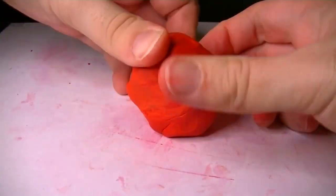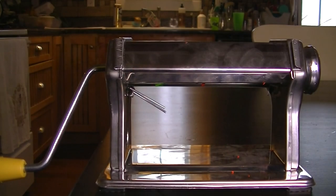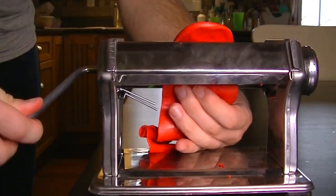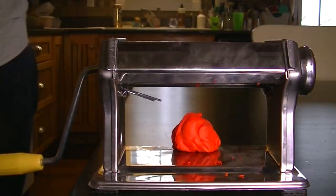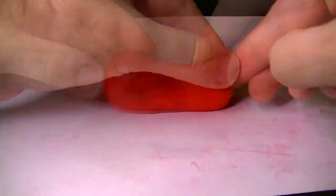Next we're going to put it through this clay conditioner, which kind of looks like a pasta machine. This will help speed up the process of softening the clay, which of course makes it easier to work with. Now we're just getting the basic shape down.